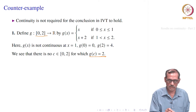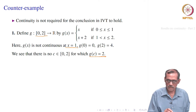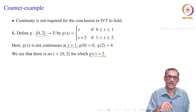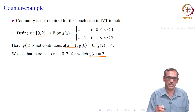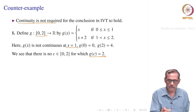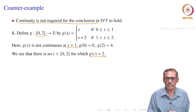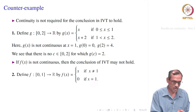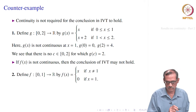So g(c) is not equal to 2 for any c. It is not continuous at x=1 and the Intermediate Value Theorem does not hold. Our earlier example in the picture also showed that. Now we are going to see that continuity is not required for the conclusion in IVT to hold — that means there can be some function where it is not continuous but the Intermediate Value Theorem still holds.